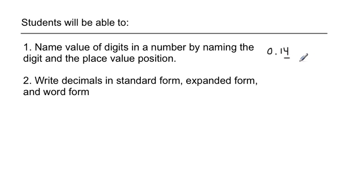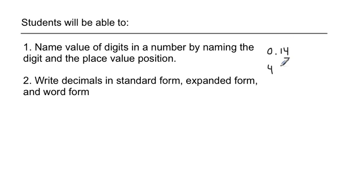I'm going to name that digit, which is a 4, and then I'm just going to name the place value. This is ones, tenths, and hundredths — so it's four hundredths.